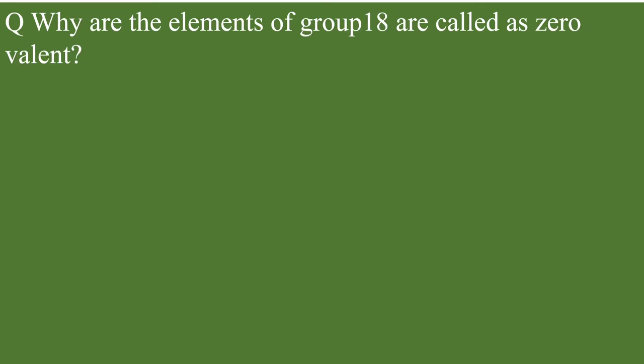Hello students, welcome to science pedagogics. Today's question is why are elements of group 18 called as zero valent? Group 18 elements have completely filled outermost shell, meaning their valence shell is completely filled.